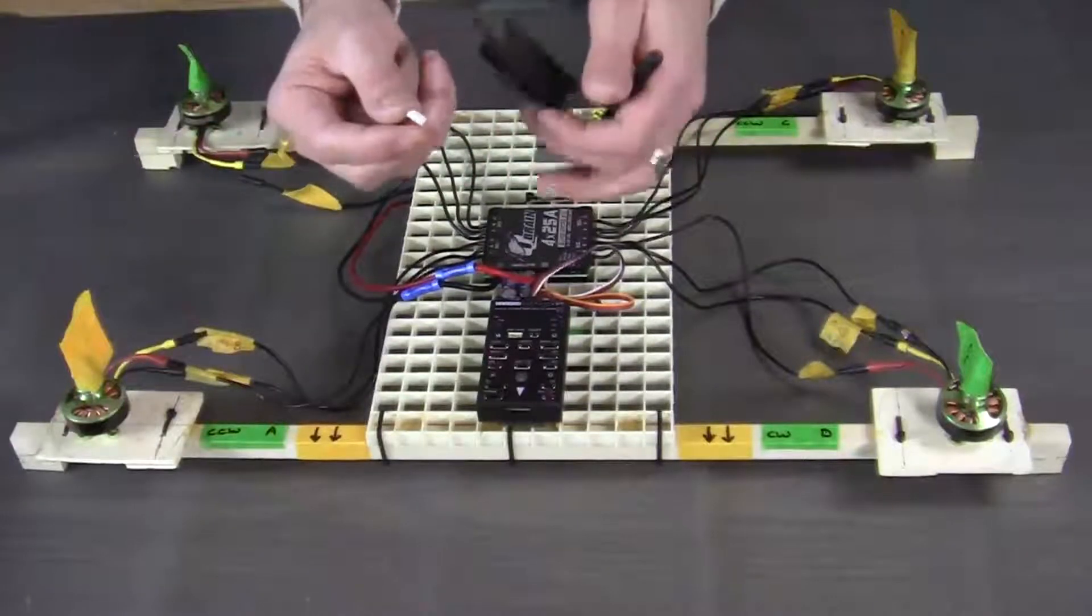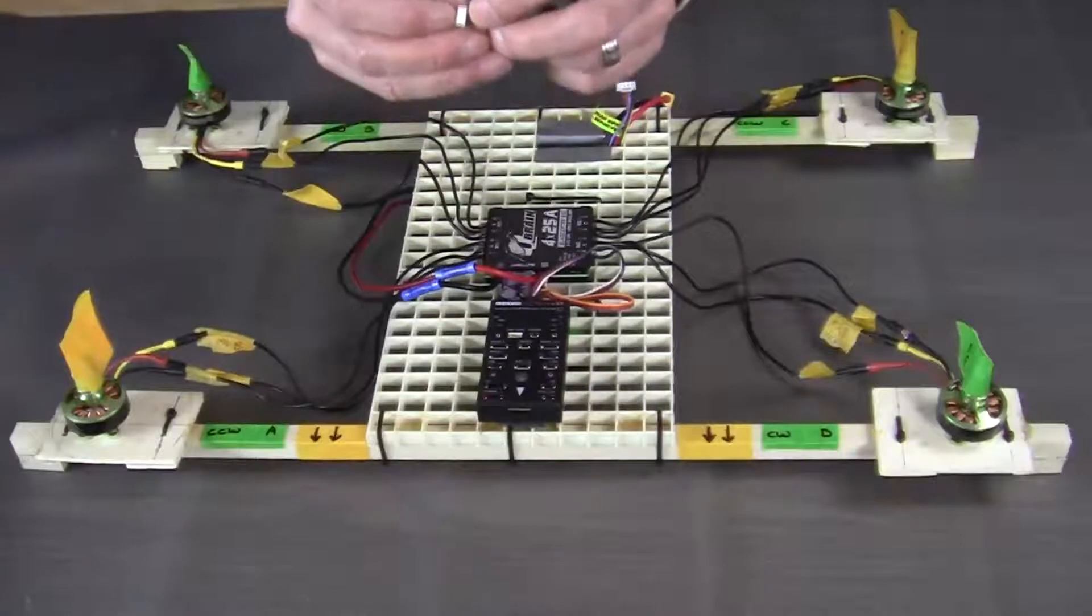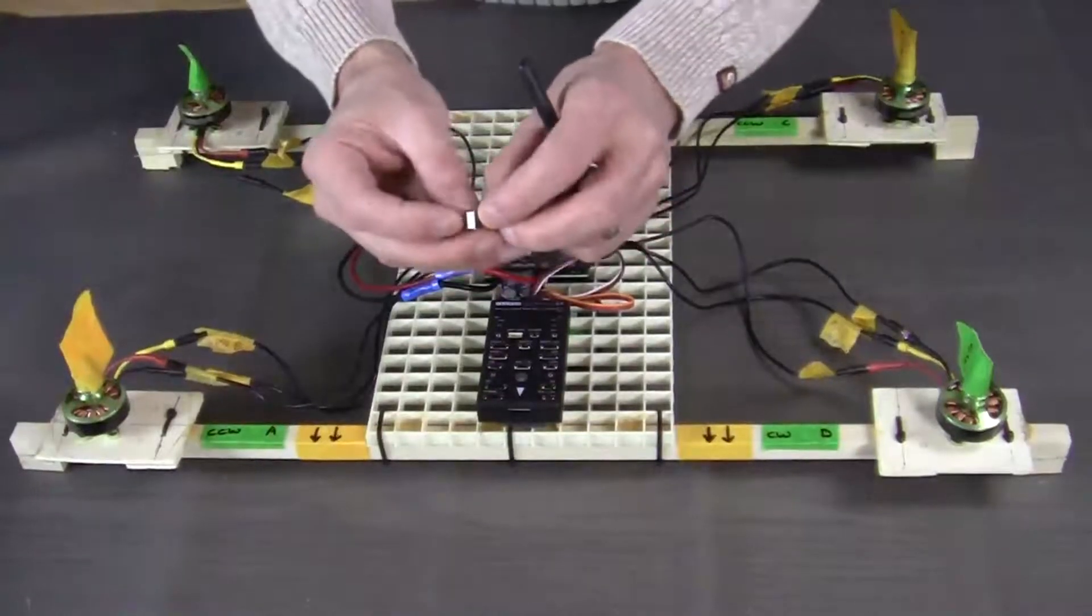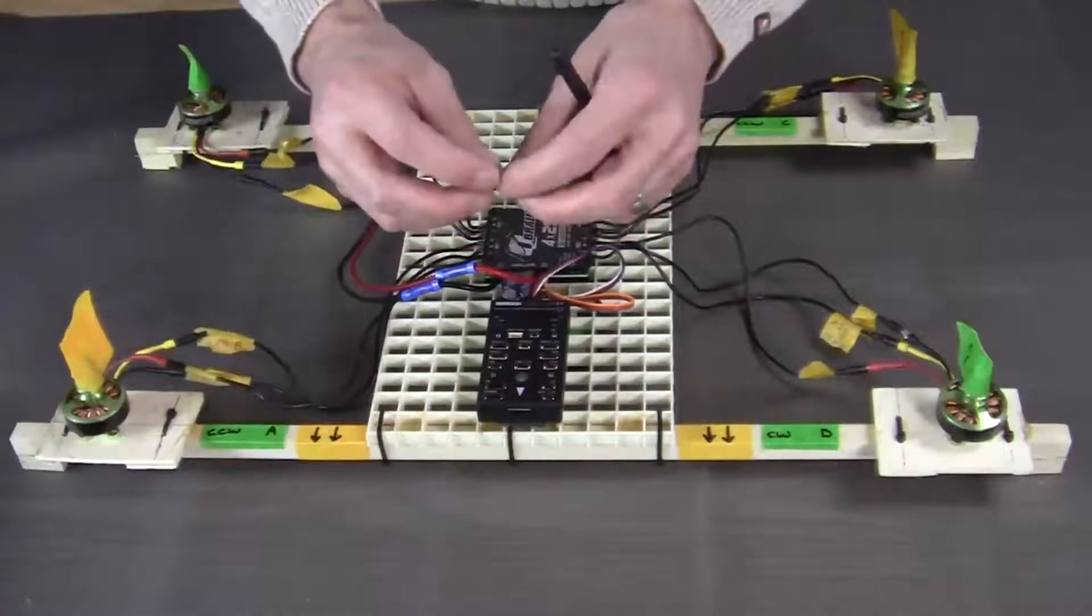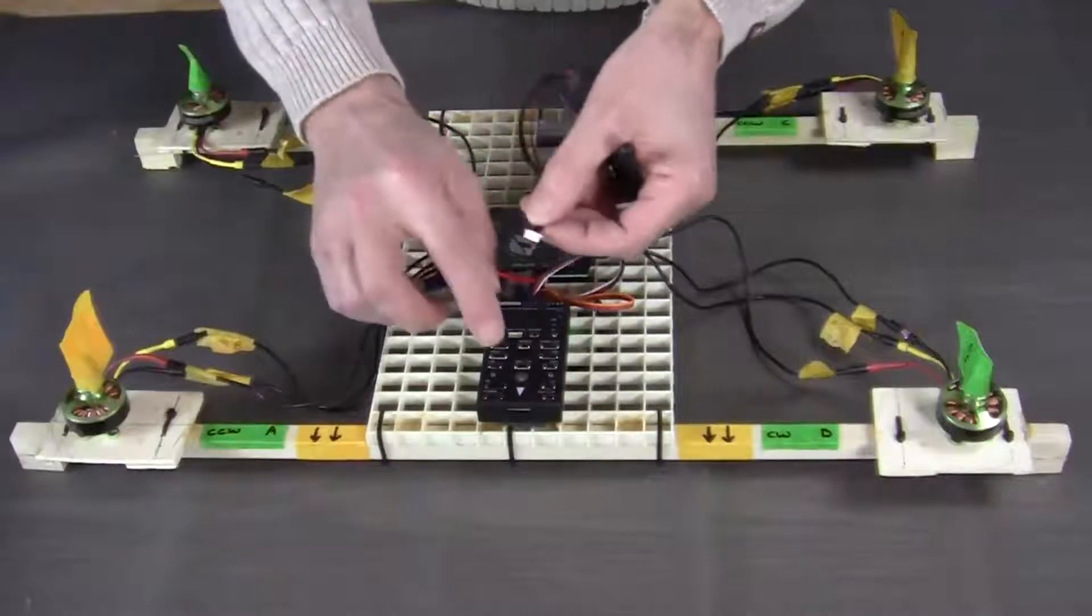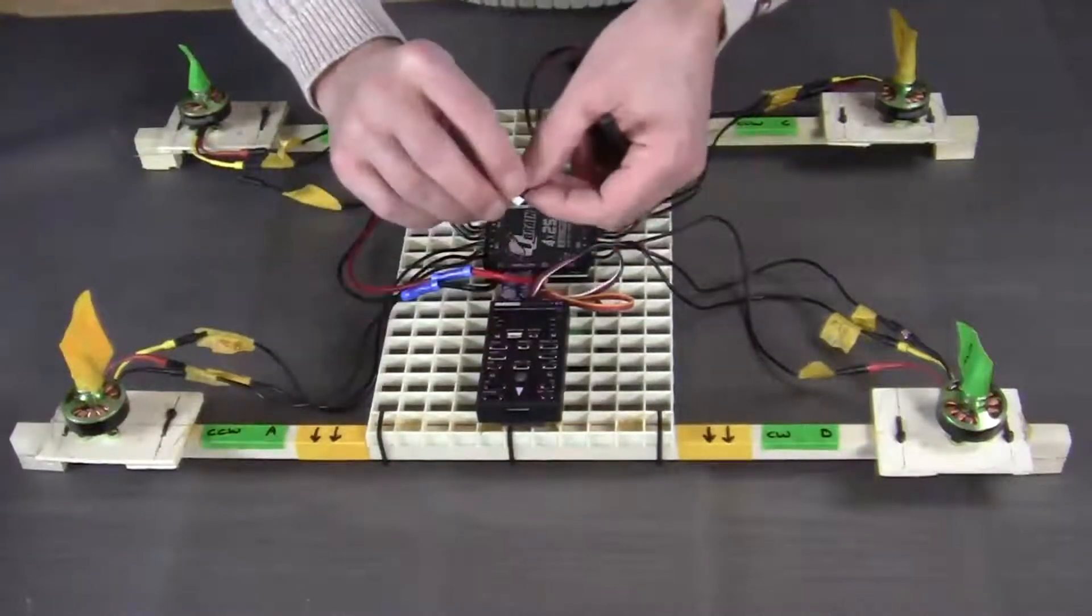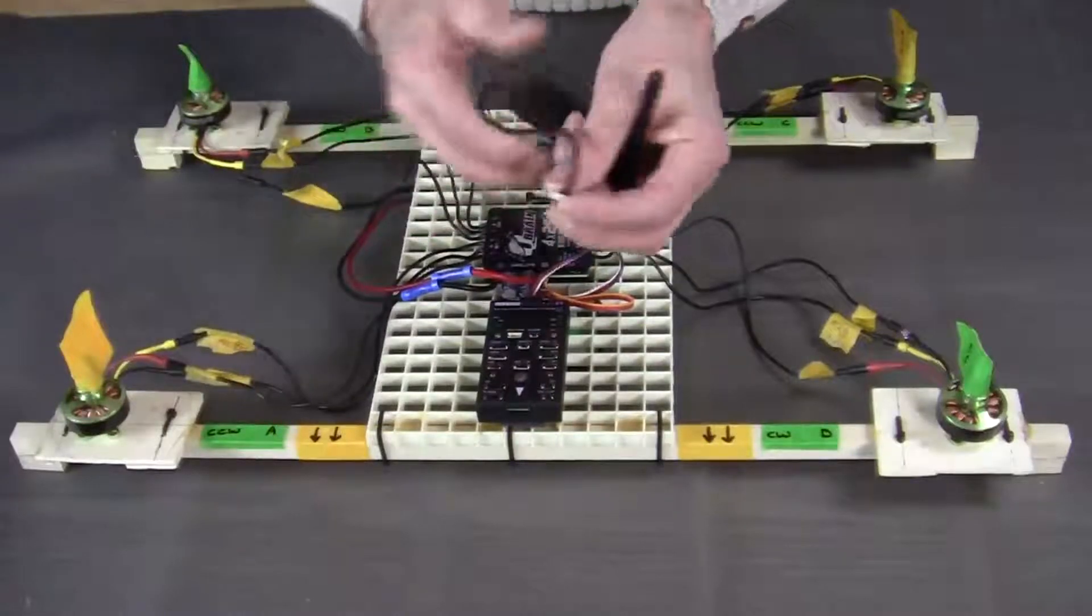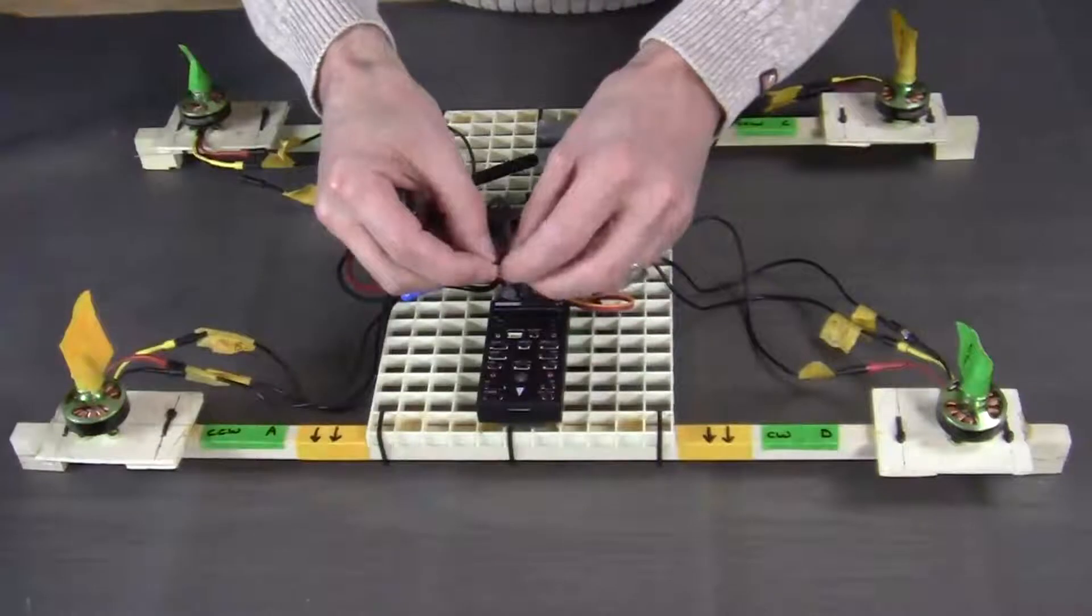One thing I do want to mention as we're beginning to connect our components: look very carefully at the connector. There's two little notches on one side. You want to make sure that these little notches are lined up with the wee little notches on the PixHawk. If you go to our website, you'll see a close-up photograph of what I mean.